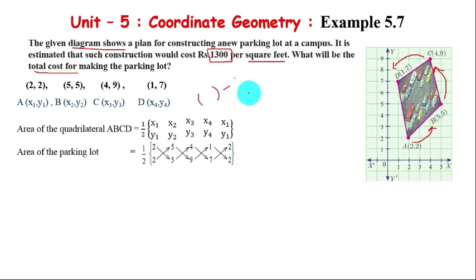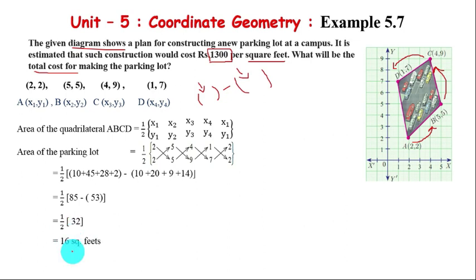First diagonal: (10+45+28+2). Second diagonal gives 85 minus 53 equals 32. One by two times 32 equals 16 square feet. That is the total area.